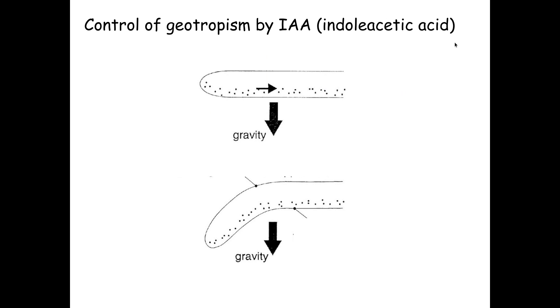In the roots, positive geotropism occurs because IAA gathers on the side of the root with the strongest gravitational pull. In roots, auxin has the opposite effect — it inhibits mitosis on the side with the strongest pull of gravity. Therefore the side with the weaker gravitational influence has more mitosis, causing the root to bend and grow downwards towards the pull of gravity.